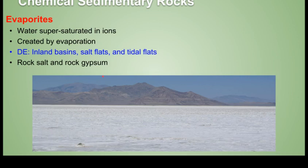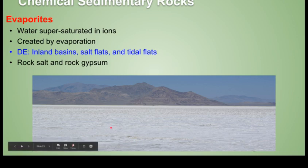Another type of chemical sedimentary rock are evaporites, and a great example of a depositional environment for these is the Bonneville Salt Flats. Here you see an immense amount of evaporites, which is the white rock in this picture. These are created by the process of evaporation — as water evaporates from a playa lake or something similar, it concentrates the ions in that water and causes precipitation of halite and gypsum, creating rock salt and rock gypsum.